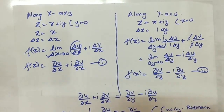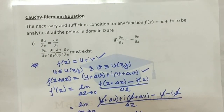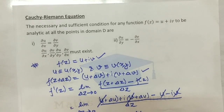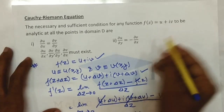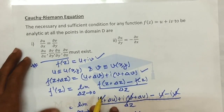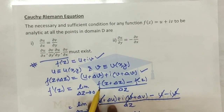Now let's recall the theorem. The Cauchy-Riemann equations state that the necessary and sufficient condition for any function f(z) = u + iv to be analytic is that ∂u/∂x = ∂v/∂y and ∂u/∂y = −∂v/∂x, given that these partial derivatives exist.